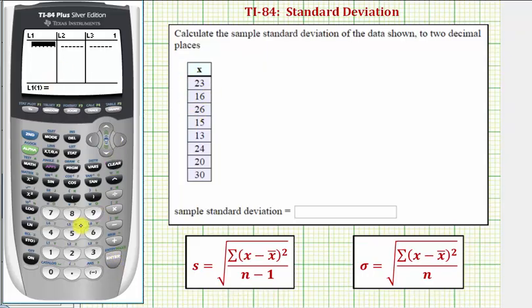Now we'll enter the data in L1. So we have 23, ENTER, 16, ENTER, 26, ENTER, and so on.